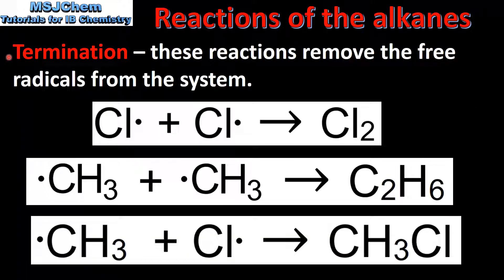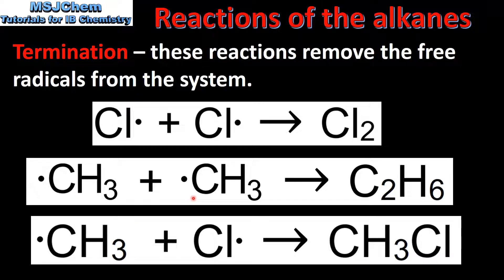The final step is termination. These reactions remove the free radicals from the system. In the first reaction, two chlorine free radicals react together to form molecular chlorine. In the second reaction, two methyl radicals react together to form C2H6, which is ethane. And here we have a methyl radical reacting with a chlorine radical to produce chloromethane.